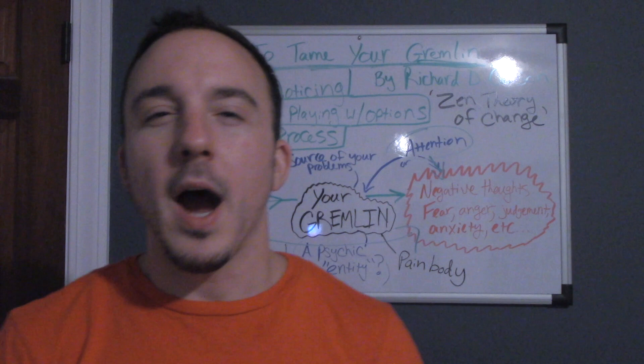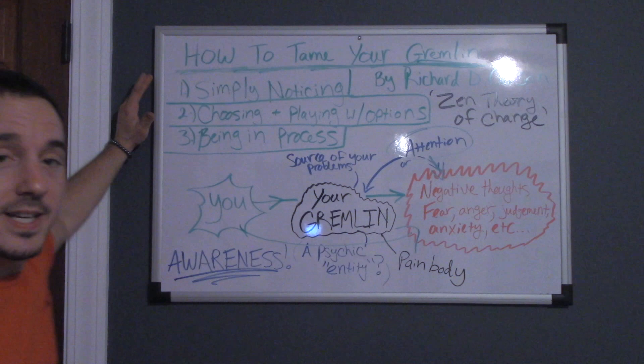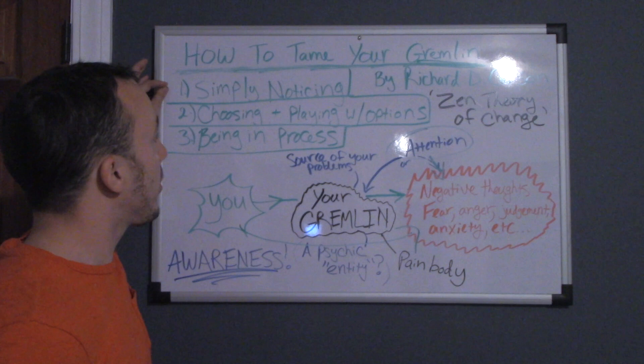In this book, he talks about how there are three steps to taming your gremlin. First, he says the first step is to simply notice. The second step is choosing and playing with options. And the third step is being in process.